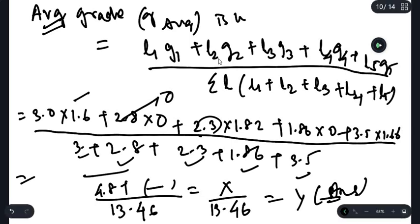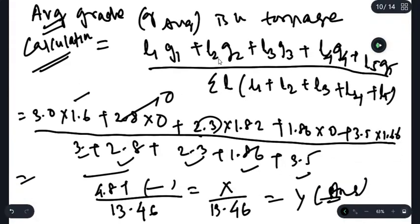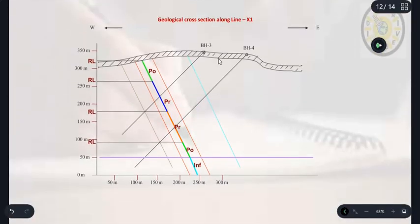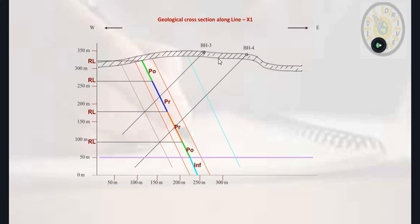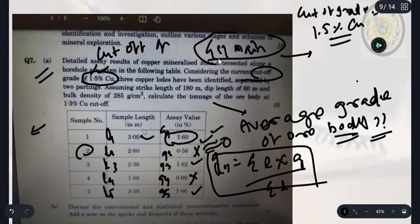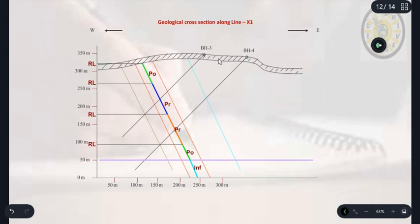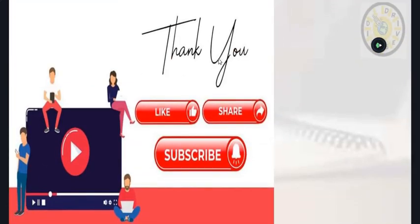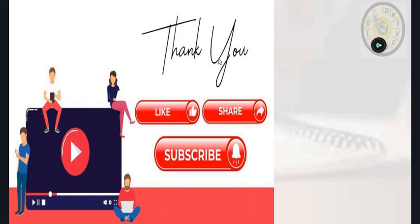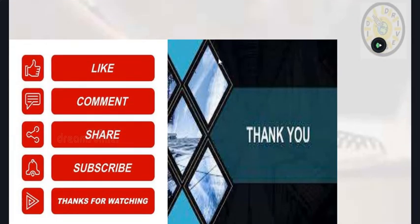Average grade is not considering - we will not take into consideration for the tonnage calculation. Tonnage calculation is not related to grade or metal content. Hope this will be beneficial for you. If any question comes in future about average grade, then you will solve this type of numerical. Hope you really like the video and if you really like it then do share with your friends. We'll meet again in the next video, thank you so much.